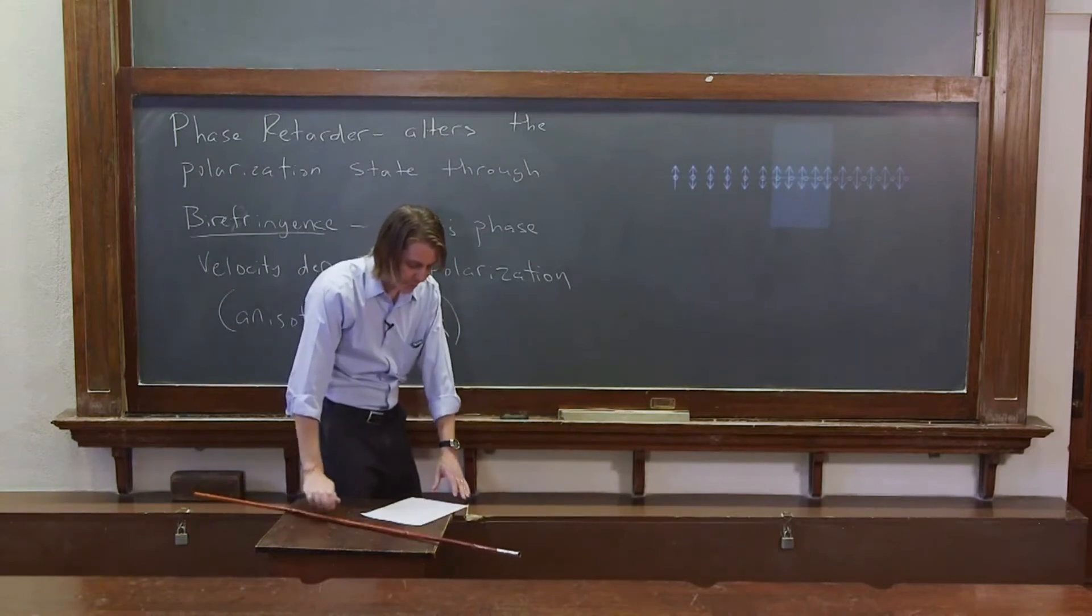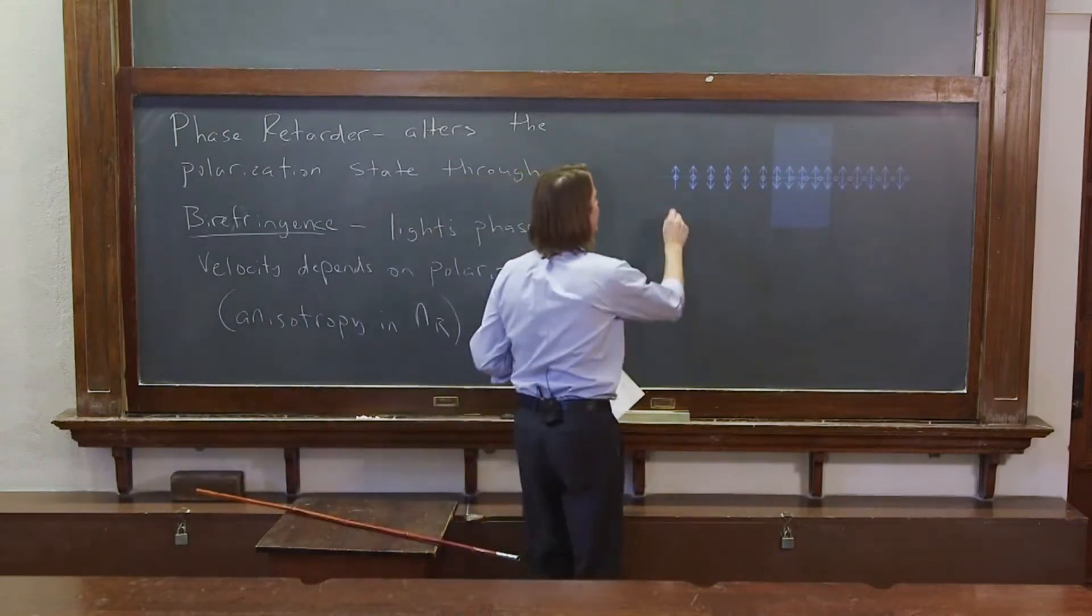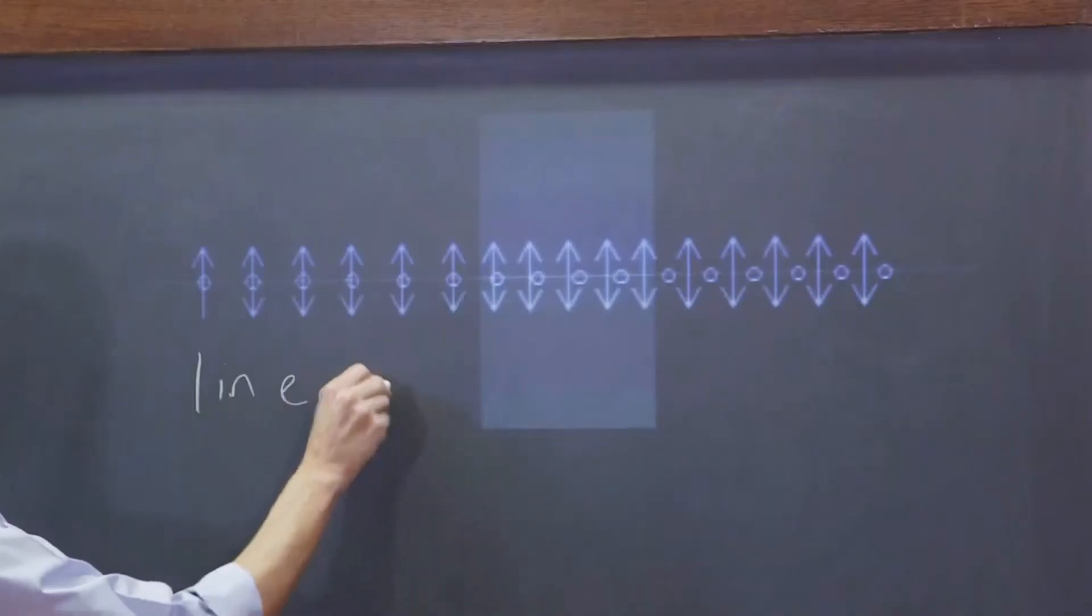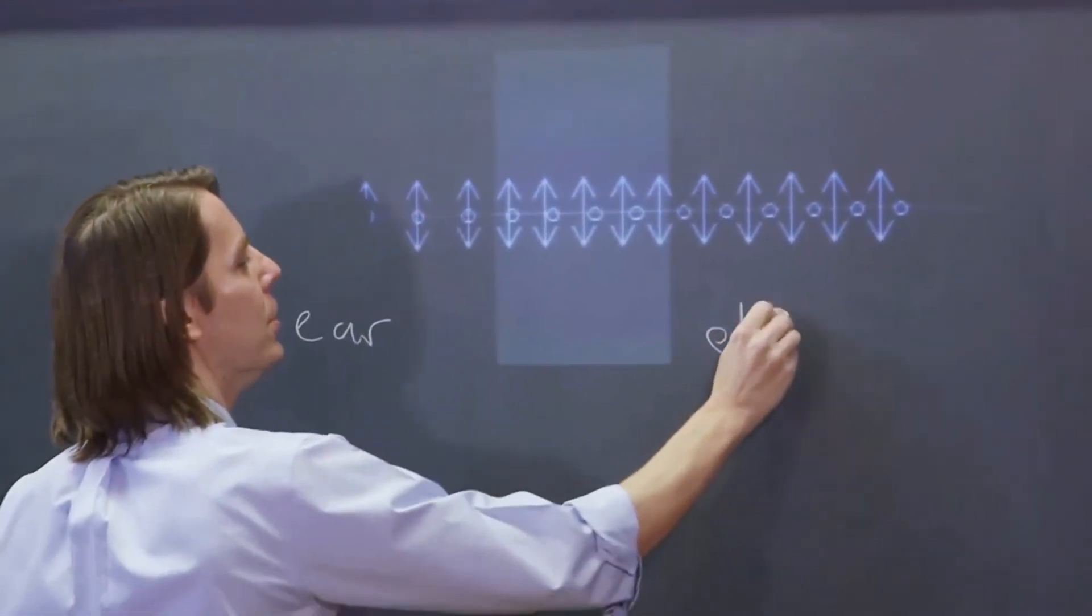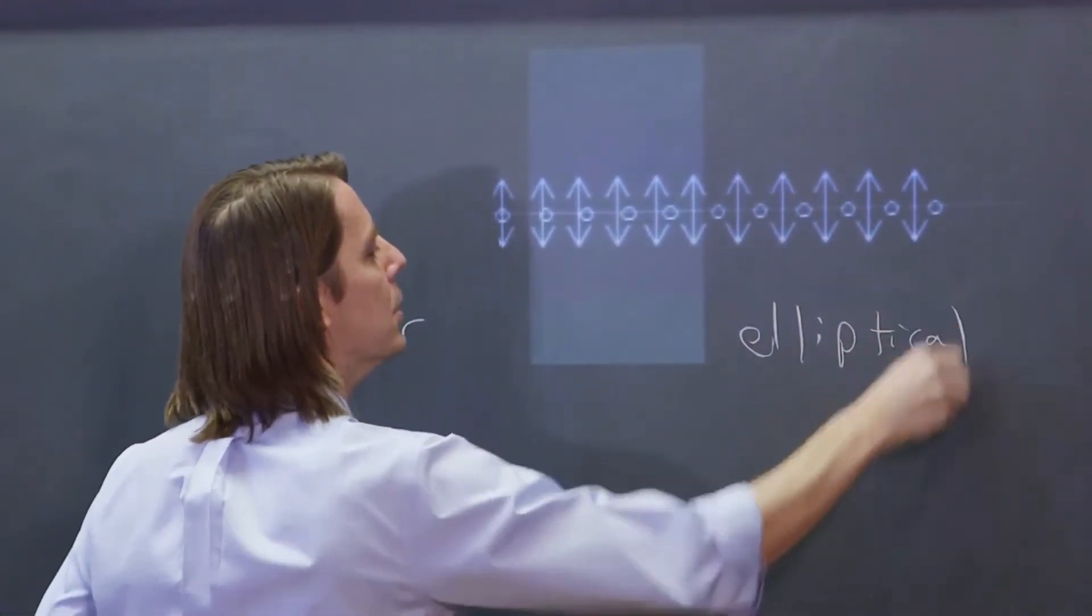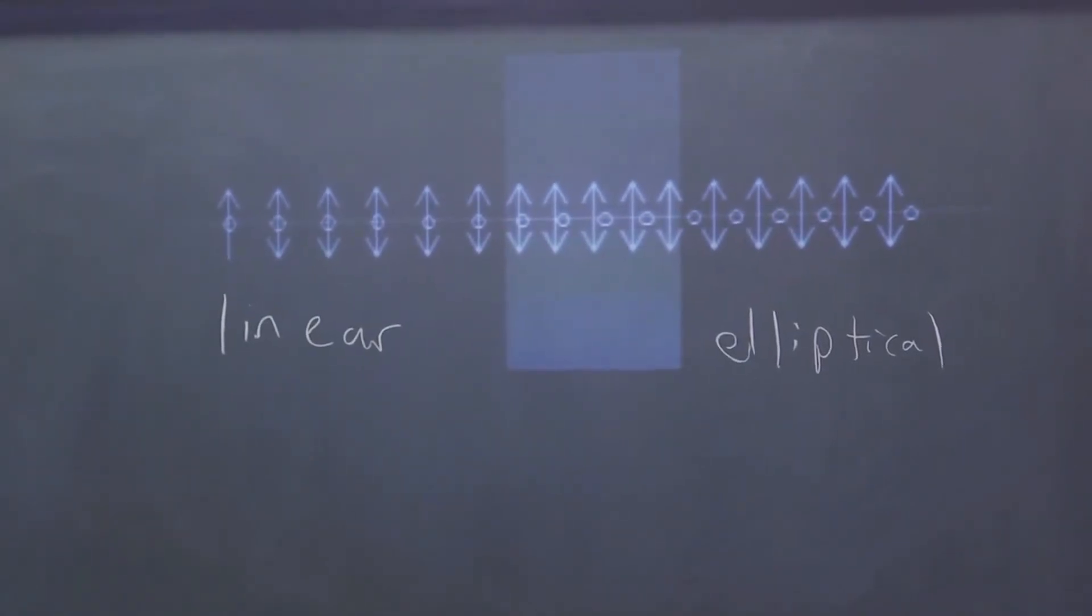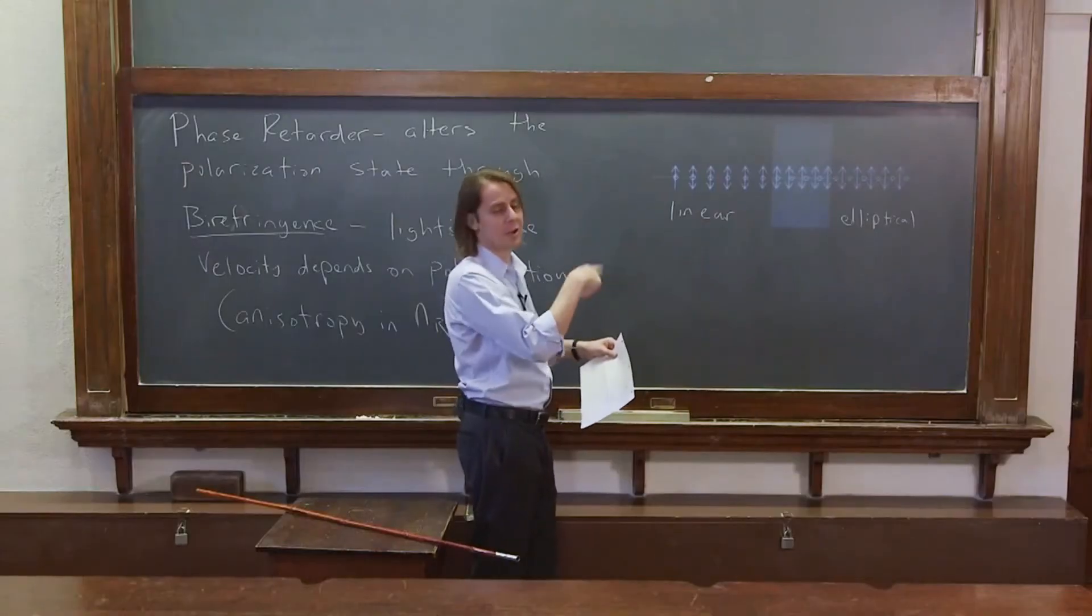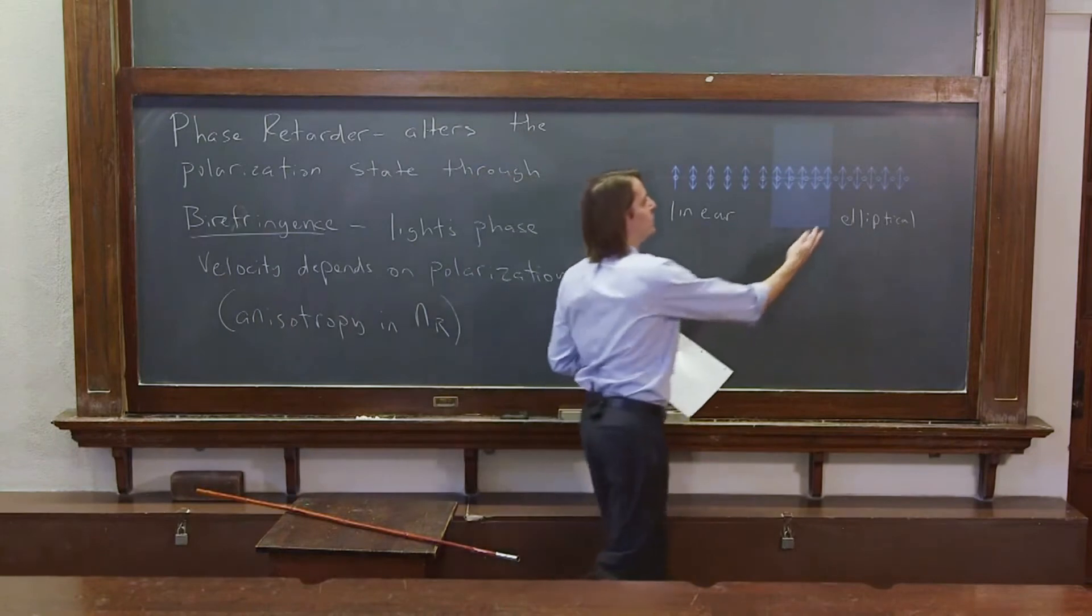So let's look at a formula for light. In general, we would say if we put linear light in, we would have some form of elliptical come out. Keeping in mind that elliptical could be linear, really like an elliptical, circular - this is just sort of a general word.